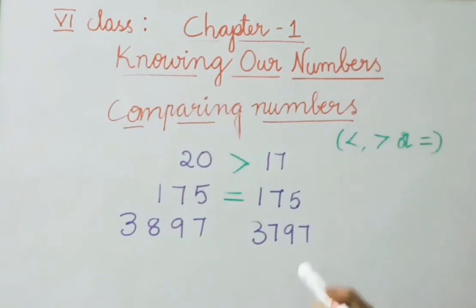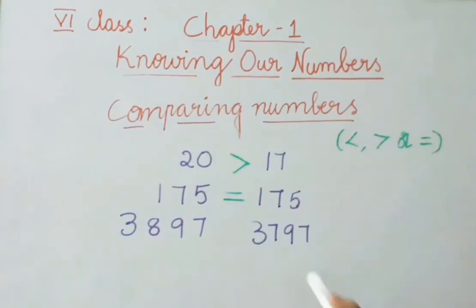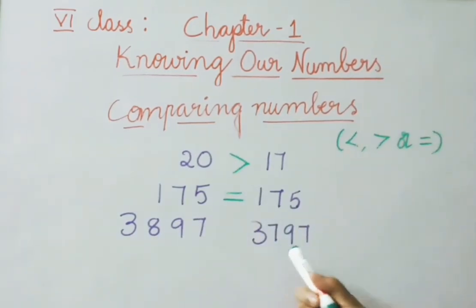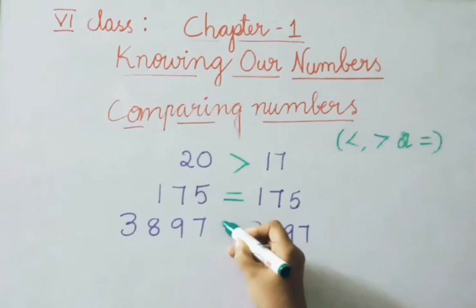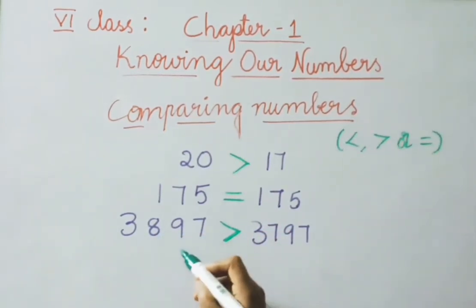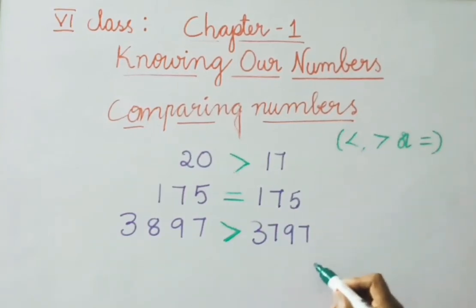Next example: 3897 and 3797. The thousands place is 3000 and 3000 — equal. Now we compare the hundreds place: 800 and 700. 800 is greater, so we use the greater than symbol. Therefore, 3897 is greater than 3797.